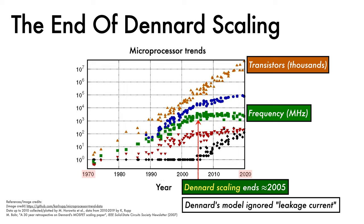Dennard and his co-authors were aware of this — they were clever folks. Their paper foresaw that leakage current was one of several limitations of their scaling model, which meant that naive scaling had to end at some point. Ultimately, as everything got smaller, leakage current became a key factor in determining the power density of microprocessors, and power density could no longer stay constant as transistors were scaled down on a chip of fixed size.